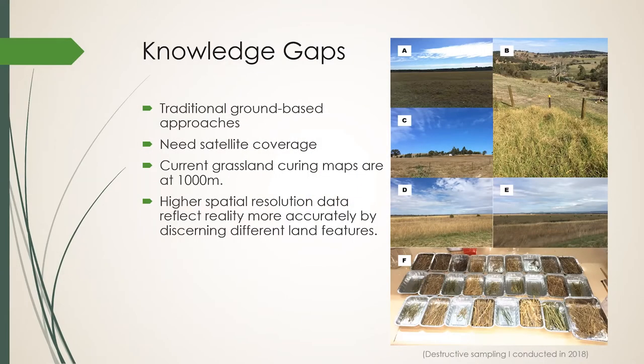Traditionally, grassland curing is estimated using ground-based approaches. Destructive sampling is the commonly agreed-upon most accurate method. However, it is very costly, time-consuming, and labor-intensive.